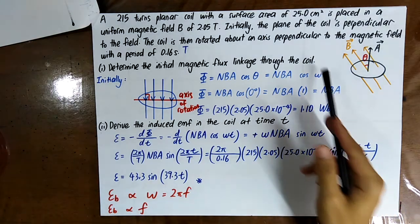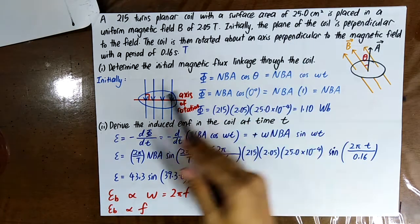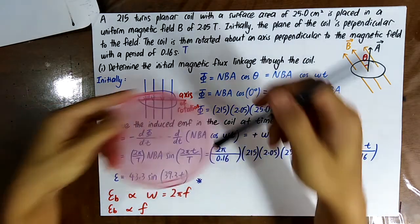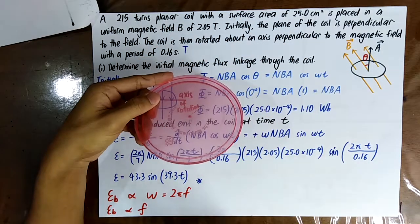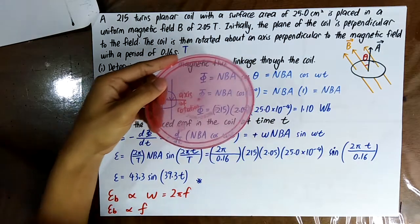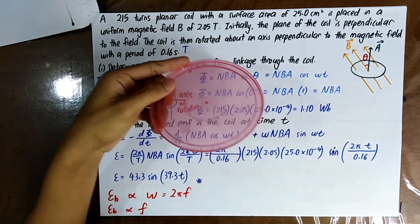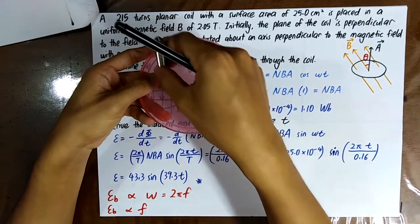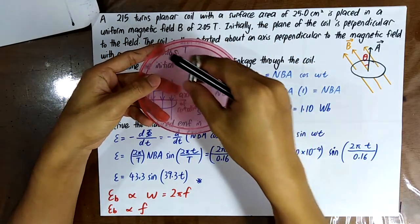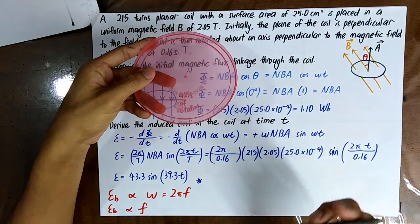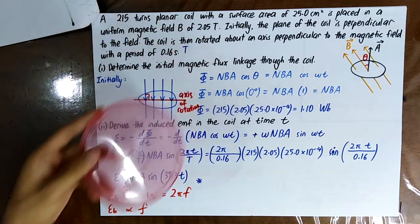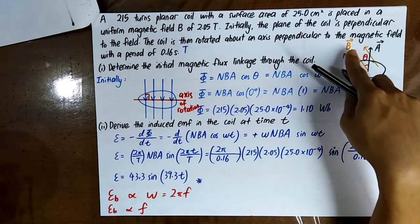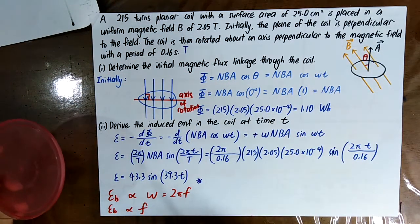Initially, the plane of the coil is perpendicular to the field. The area vector must be perpendicular to the surface area at all points. So at this time, A and B are in the same direction.